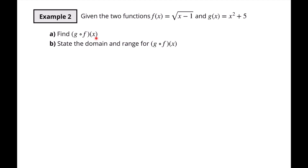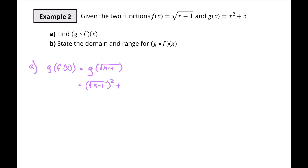Find G(F(x)). That means we put F(x) inside G. So G(√(x−1)): everywhere we see x in G, we replace it with √(x−1), giving (√(x−1))² + 5. A square root squared just leaves the inside piece, so that simplifies to (x minus one) plus five, which equals x plus four.